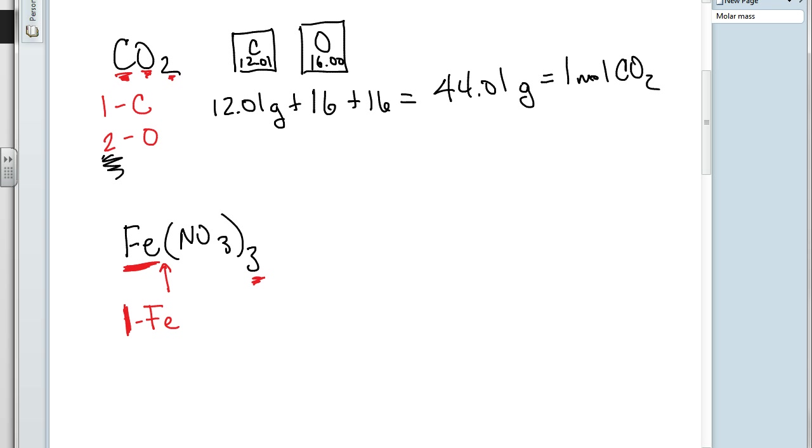Now, this 3 on the outside of the parentheses distributes through. Essentially, what we mean is we're going to multiply this through to the oxygen and we're going to multiply this through to the nitrogen. So, what that means is, we'll go for the nitrogen first, we're going to have 3 times 1. So, we have 3 nitrogens. And then we're going to have 3 times 3, and we're going to have 9 oxygens. We distribute through. We multiply it through. Now, we know the numbers of atoms within this ionic compound formula unit. And we can do our calculation.